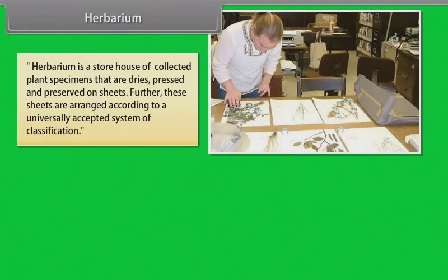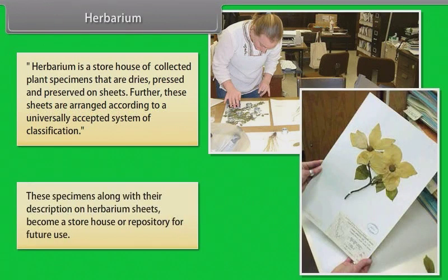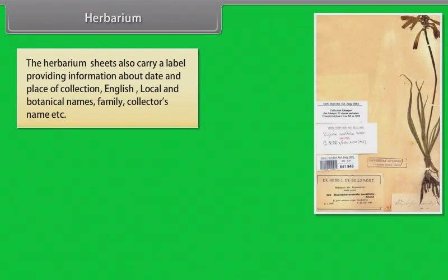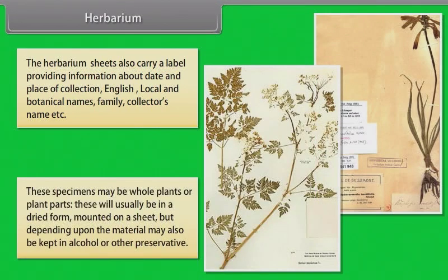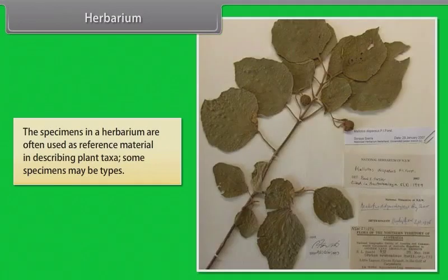A herbarium is a storehouse of collected plant specimens that are dry, pressed and preserved on sheets. These sheets are arranged according to a universally accepted system of classification. The specimens, along with their descriptions on herbarium sheets, become a repository for future use. Herbarium sheets carry a label providing information about date and place of collection, English, local and botanical names, family, and collector's name. Specimens may be whole plants or plant parts, usually in dried form mounted on a sheet, but may also be kept in alcohol or other preservatives. Specimens in a herbarium are often used as reference material in describing plant taxa.